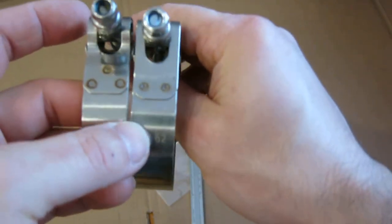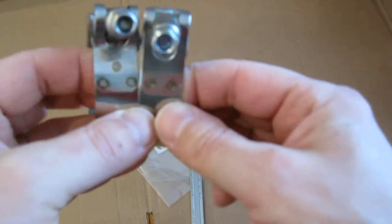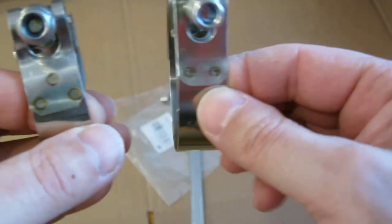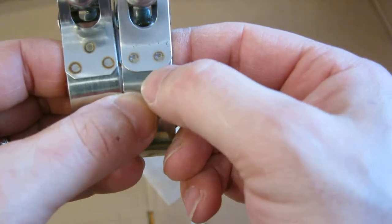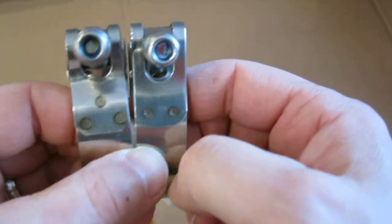A couple things I noticed - you can see this is the Mishimoto here on the right. You can see there's two spot welds here, but there's three on the HPS.